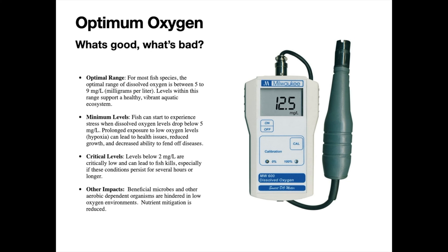Within that range you've got a very healthy ecosystem — all things are supported well, not stressed, and not suffering because of anything related to oxygen. The minimum levels you want to see: fish can start to experience stress when DO gets below 5 milligrams per liter. Prolonged exposure below 5 mg/L can definitely lead to health issues — you'll often see reduced growth rates and a diminished immune system. As DO continues to drop to four or three, more pressure is put on fish. Critical levels usually come somewhere below 2 milligrams per liter — fish can start to die, especially if that level is maintained for a couple of hours to a couple of days, which can lead to mass fish loss.